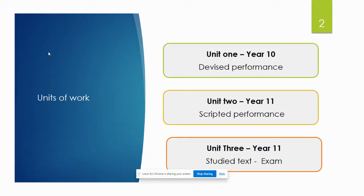The GCSE consists of three units. They are all done as a practice in year 9 and for real in years 10 and 11.